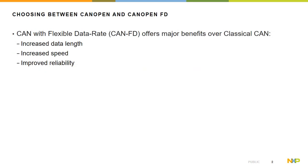CANFD offers several benefits over classical CAN, including increased data length, speed, and reliability. CANopenFD is an advancement of CANopen developed with special regard to leveraging CANFD's higher data throughput while maintaining the key attributes of CANopen.